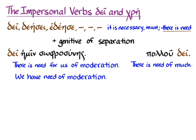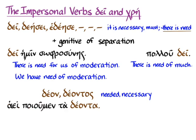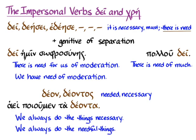The participle of δεῖ, δέον, δέοντος, means in its adjectival use 'needed' or 'necessary,' so you'll see it used substantively. For example: ἀεὶ ποιοῦμεν τὰ δέοντα means 'we always do the things necessary,' or perhaps 'we always do the needful things' — the things you must do, τὰ δέοντα.